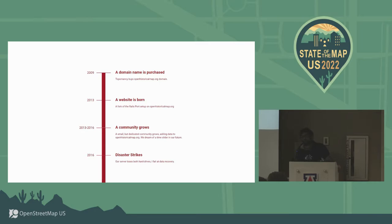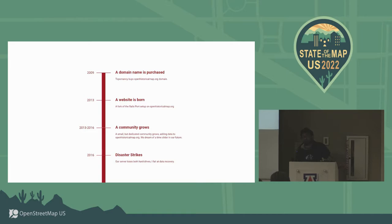Towards the end of that project, Tim Waters — who used to run a great project called MapWarper — suggested: what if we just use the OpenStreetMap software? What if we just use OpenStreetMap and add two tags: start date and end date? It'll be exactly OpenStreetMap, we'll add two tags, and then we'll be able to show features by date.